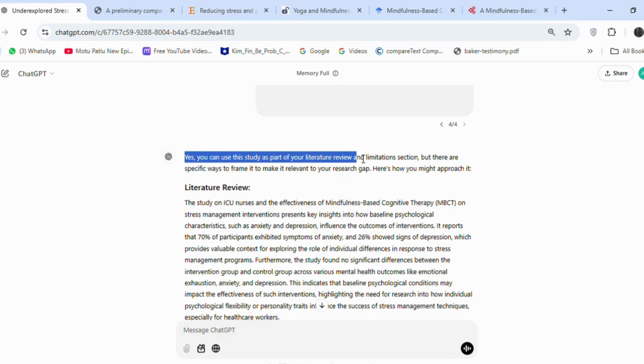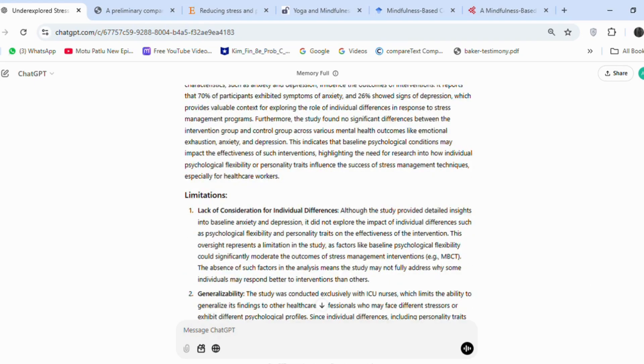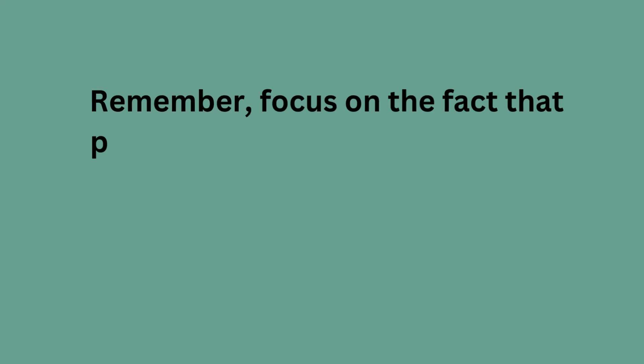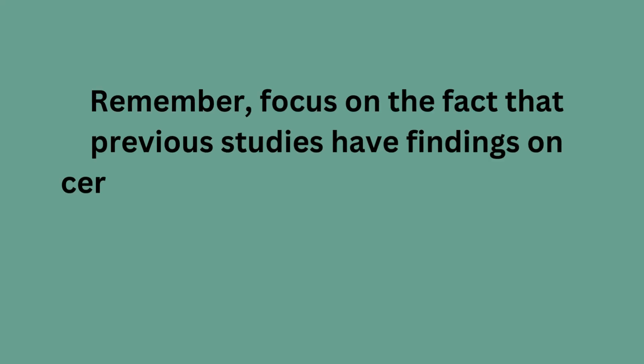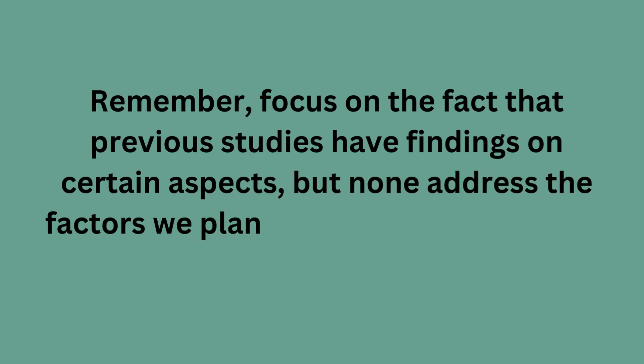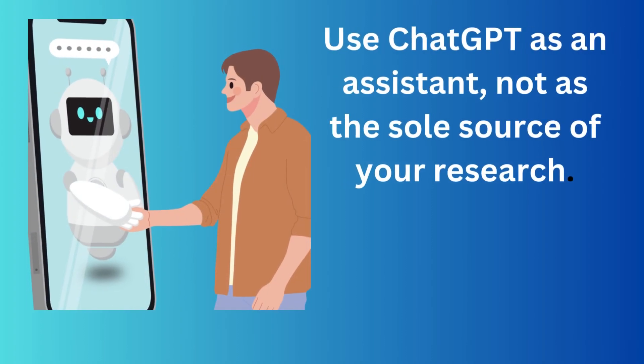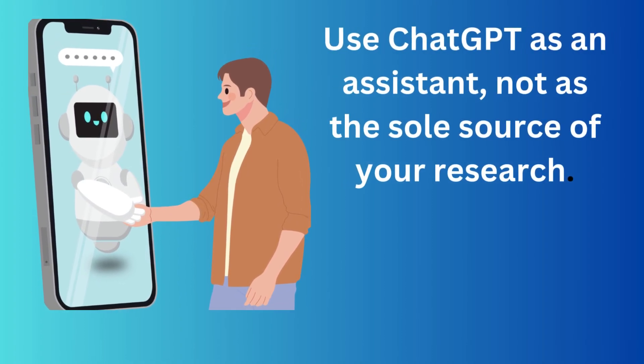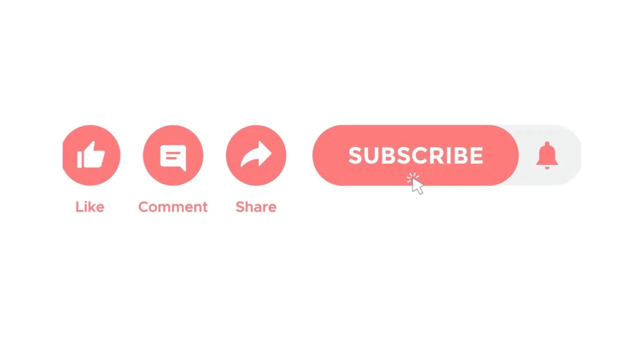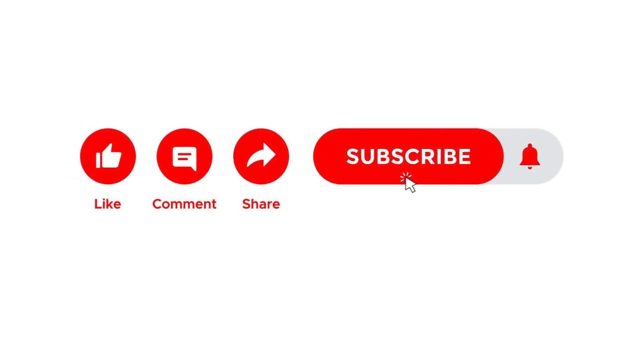You can repeat this process to find more literature and limitations. Remember, focus on the fact that previous studies have findings on certain aspects, but none address the factors we plan to explore — that's where the gap lies. I know this process can be exhaustive, but as a researcher, whether you are a student or working on research for class, do not rely solely on AI tools like ChatGPT. Use ChatGPT as an assistant, not as the sole source of your research. Please subscribe, like, and share for more research tips.